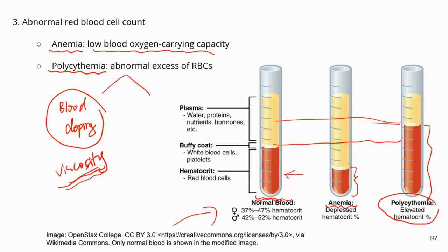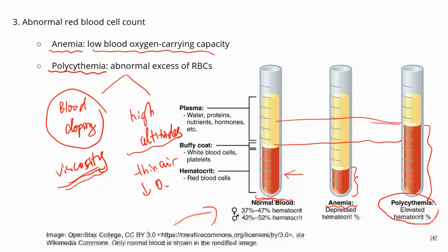Sometimes polycythemia can be a normal response to environmental factors. For example, if someone moves to a high-altitude area, where the air is thinner and oxygen levels are lower, the body makes more red blood cells to meet oxygen demand. This increases the red blood cell count, but it's usually a normal condition.